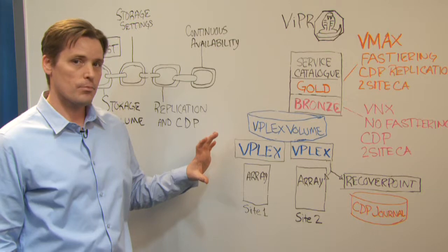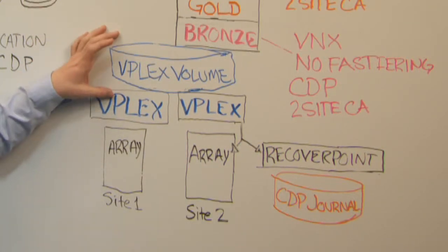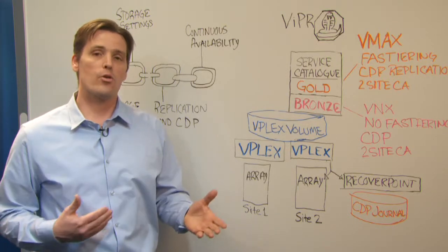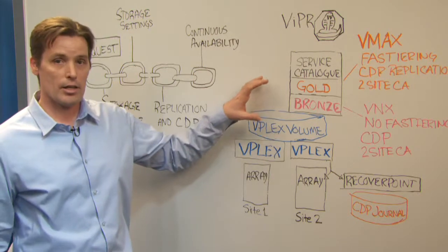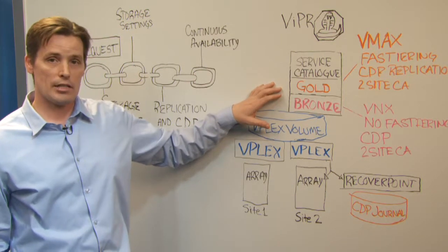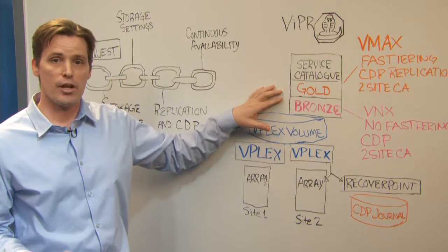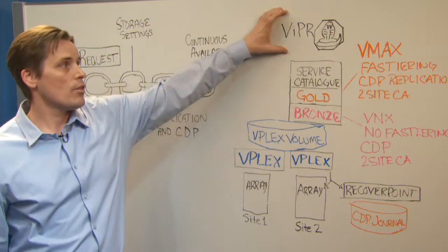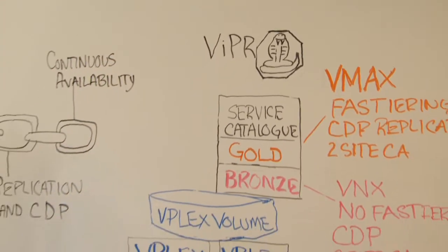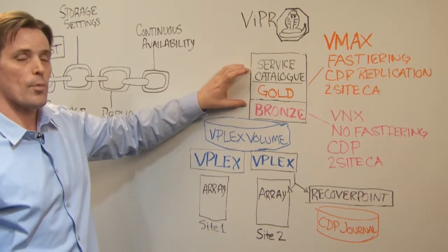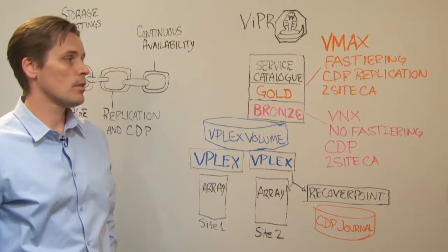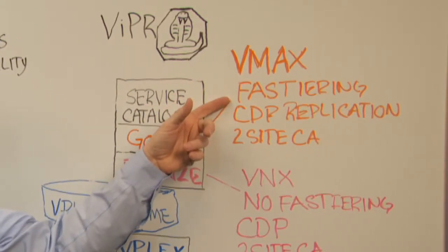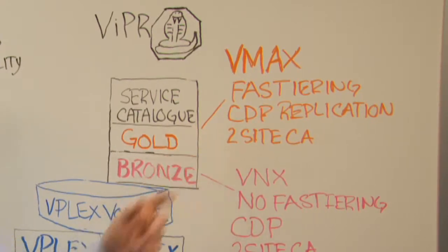But the benefits don't stop there. Once this storage element is provisioned and as it continues to operate throughout its life, there might be a request for a change. For example, this was a test and dev application that might at some point need to become a production application with higher levels of IOPS and more protection. The enterprise user might specify the application to go from bronze to gold, representing a higher level of performance. That gold storage element might be on a VMAX, with fast tiering enabled, and continue to offer CDP replication and two-site continuous availability.